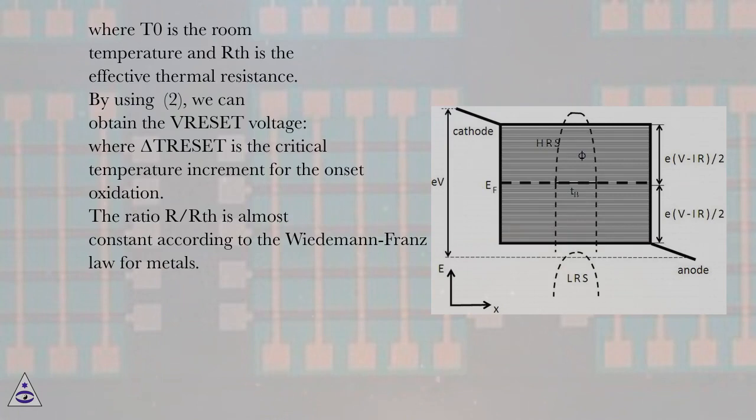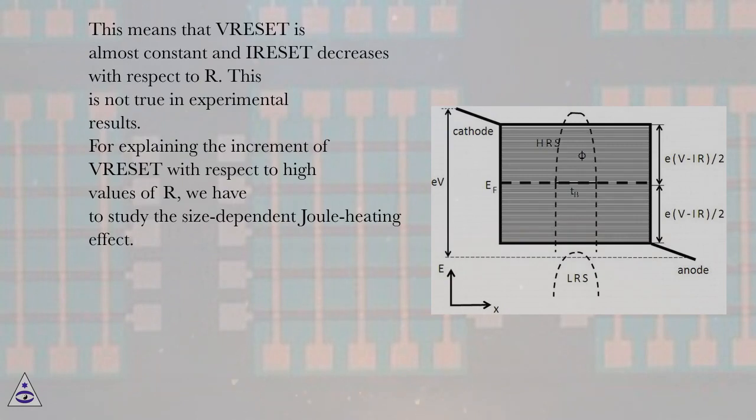The ratio R/RTH is almost constant according to the Wiedemann-Franz law for metals. This means that VRESET is almost constant and IRESET decreases with respect to R. This is not true in experimental results. For explaining the increment of VRESET with respect to high values of R, we have to study the size-dependent Joule heating effect.